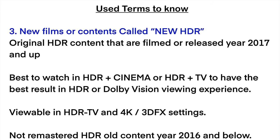Term 3: New films or contents called New HDR — original HDR content filmed or released year 2017 and up. Best to watch in HDR plus cinema or HDR plus TV to have the best result in HDR or Dolby Vision viewing experience. Also viewable in HDR TV and 4K 3D FX settings. Not remastered HDR old content year 2016 and below.